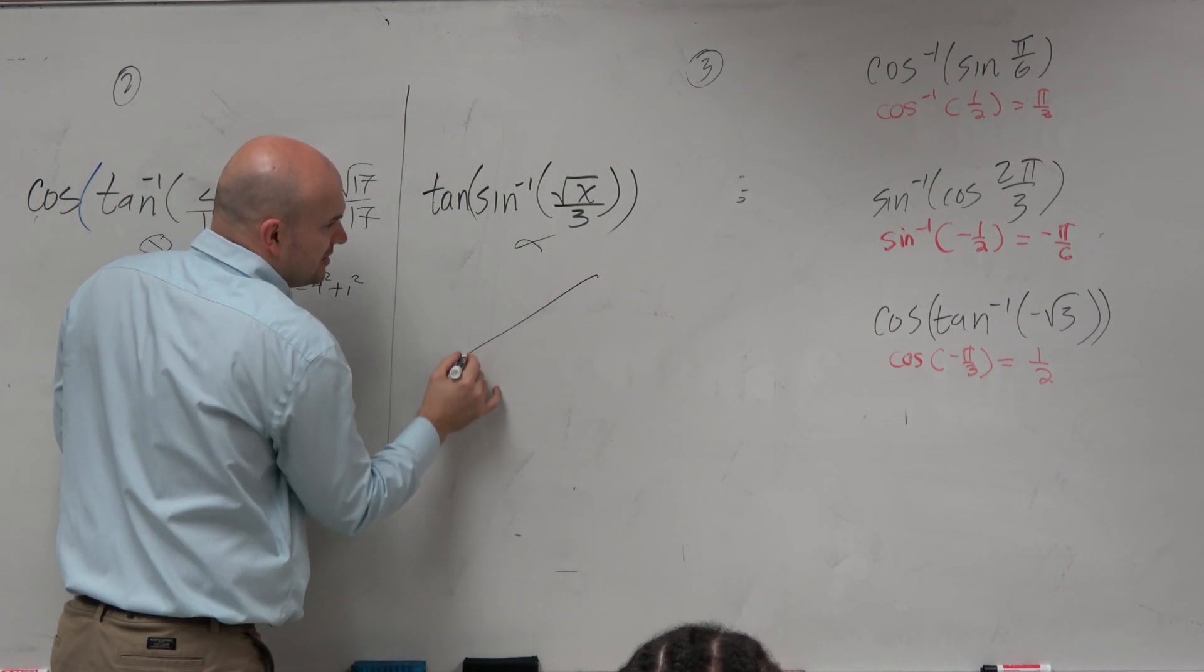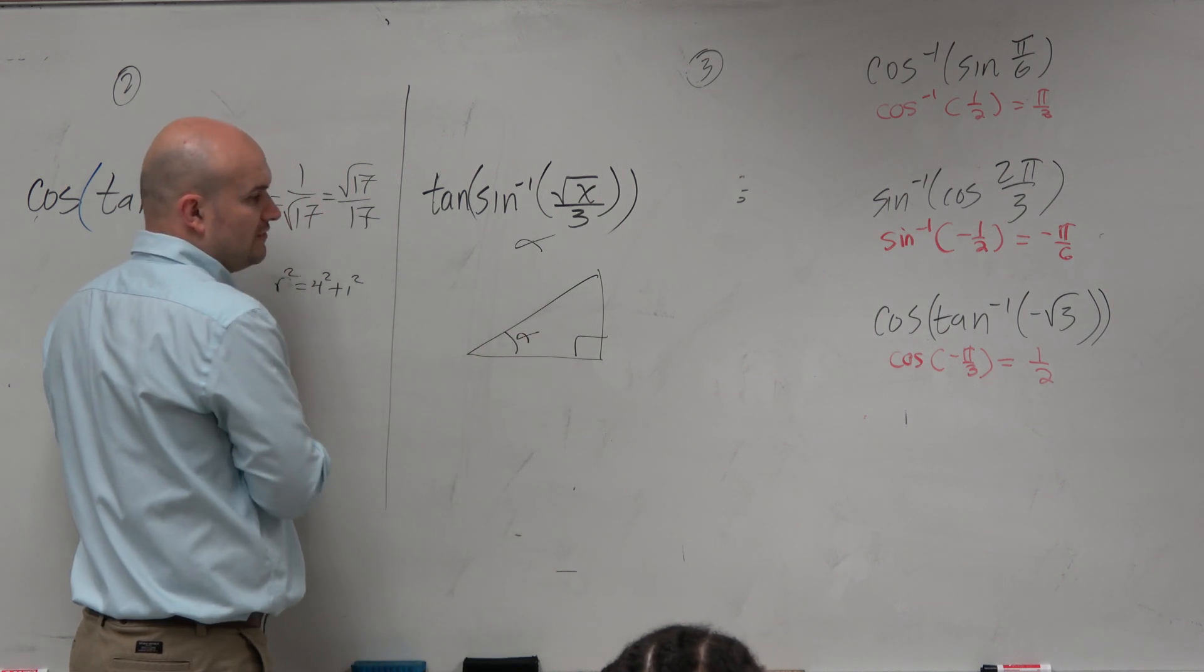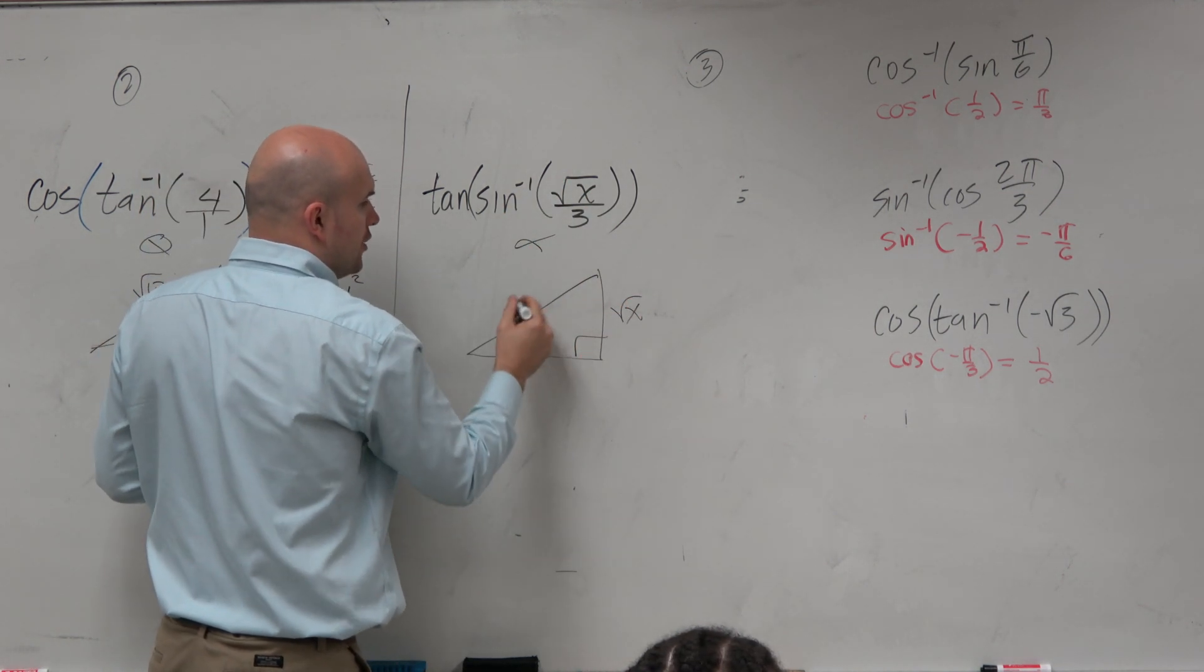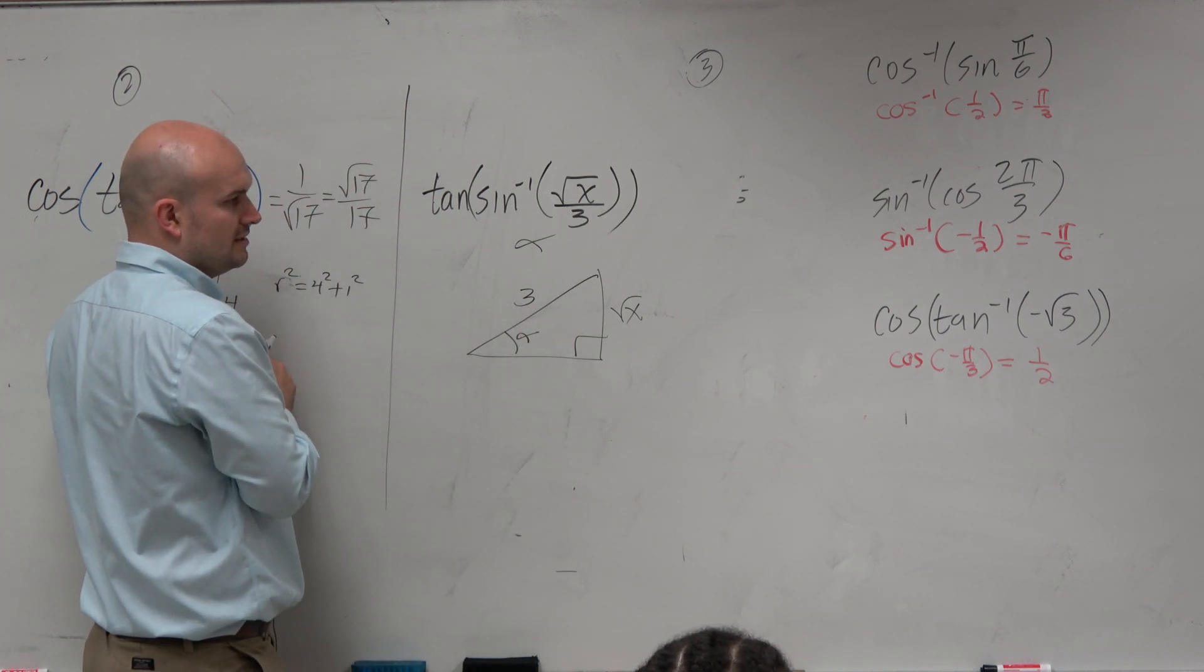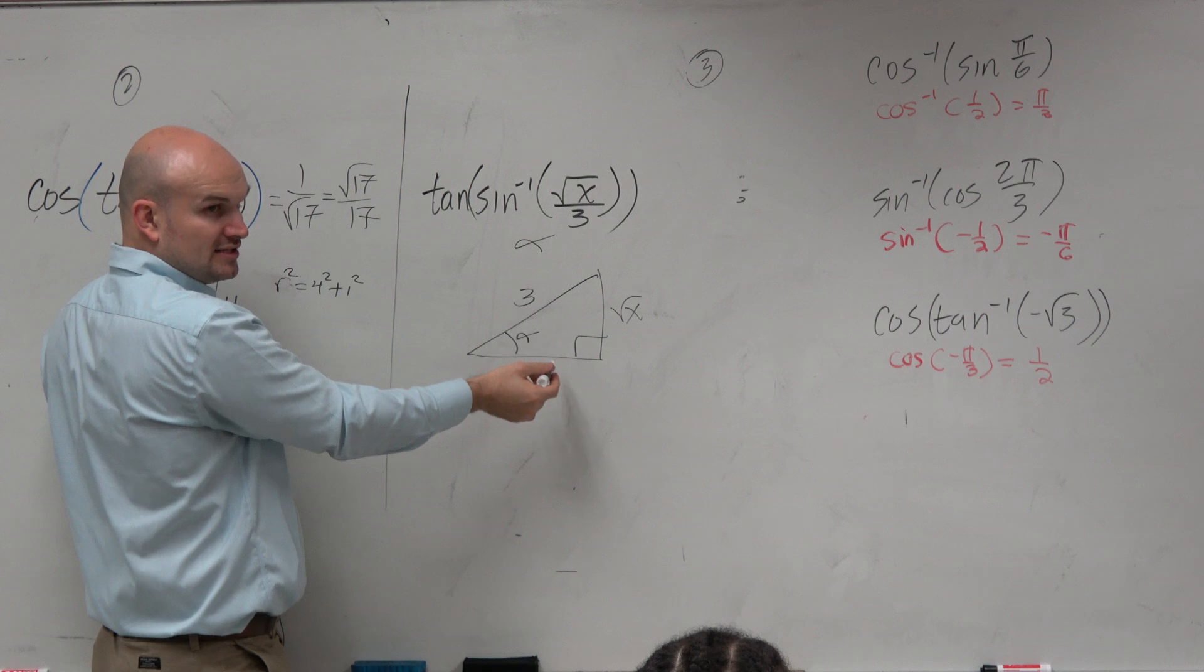Right? So let's draw, let's represent this. There's alpha. Again, sine is opposite over hypotenuse. Now, if I need to find the tangent of this angle alpha, I need to figure out the adjacent.